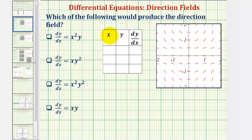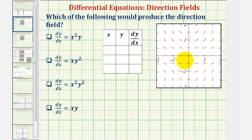We want to determine which derivative function on the left would produce the direction field, or slope field, on the right. To do this, we'll select points on the coordinate plane, find the derivative function values at those points, then determine which derivative function gives values that match the slopes of the segments in the direction field.